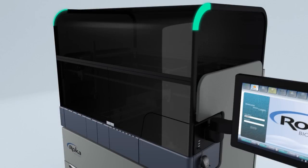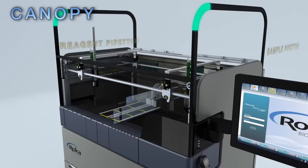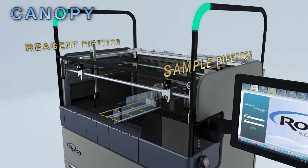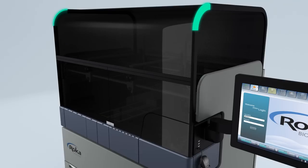The instrument is composed of four main areas. The canopy of the instrument houses the two independent state-of-the-art pipetters, allowing for greater flexibility in performing assays on the instrument.